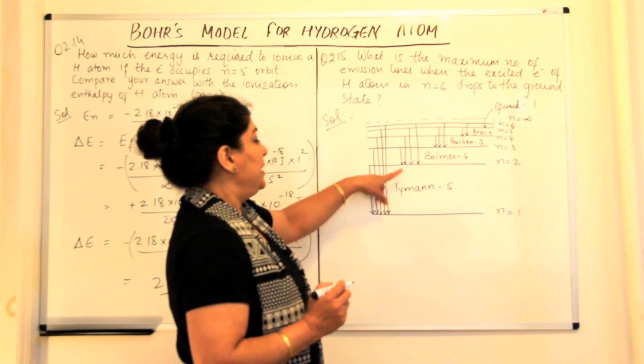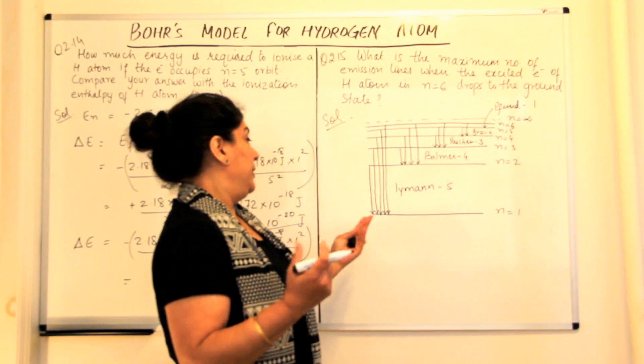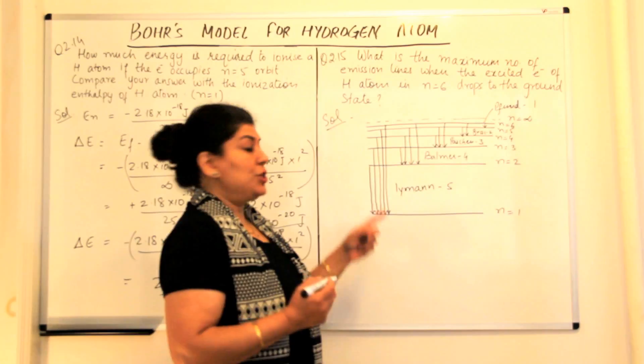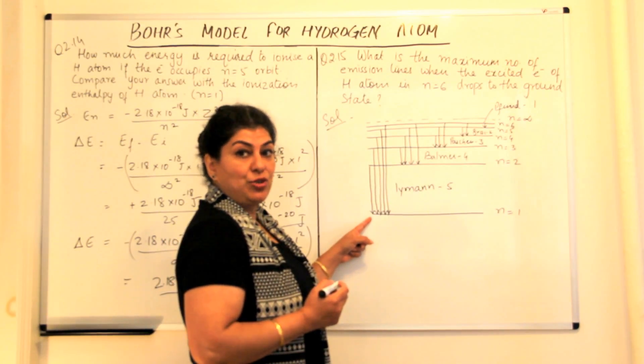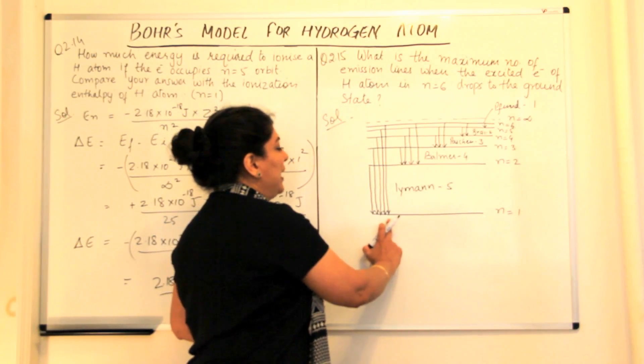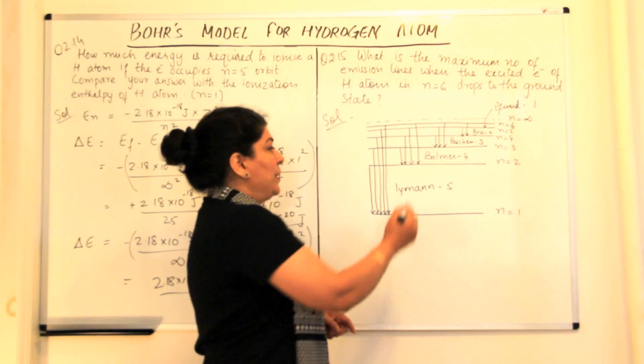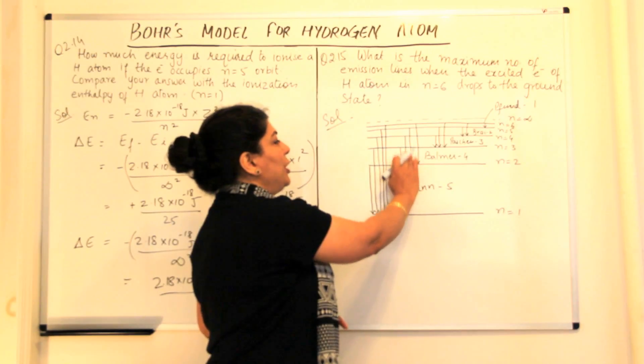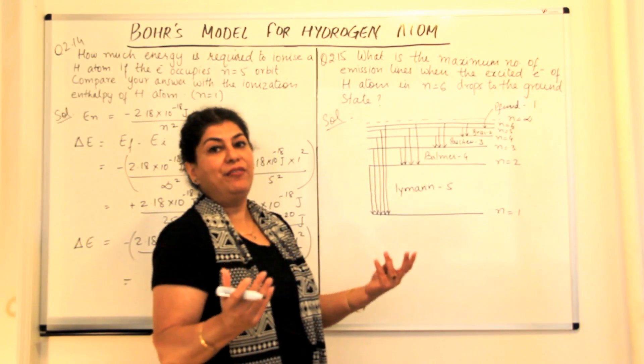The Lyman series, when electrons jump back to the first shell, there are five possible options. When electron comes from the second shell to the first, third to first, fourth to first, fifth to first, sixth to first. So you get five lines in the Lyman series.